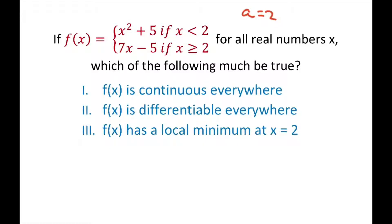So there might be a problem where A equals 2, so we just plug it into both pieces. If you plug in 2 into the upper portion, you're going to get 2 squared plus 5, that equals 9. And if you plug it into the lower portion, this is going to be 7 times 2 minus 5, and that also equals 9. So the function is continuous everywhere. That works.